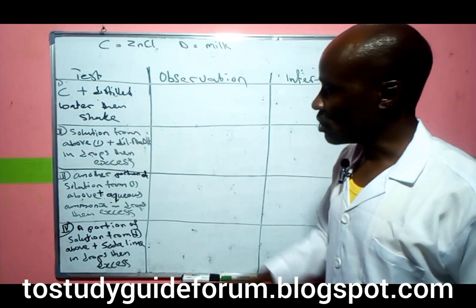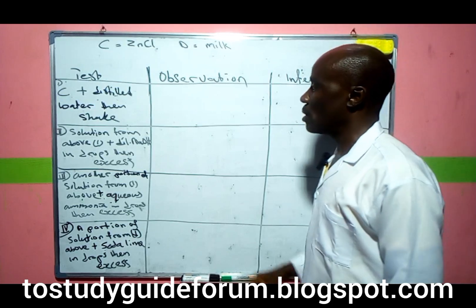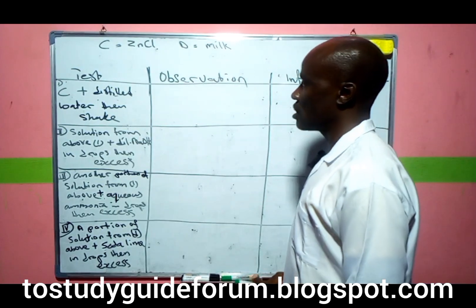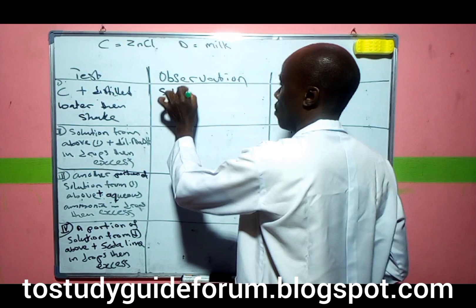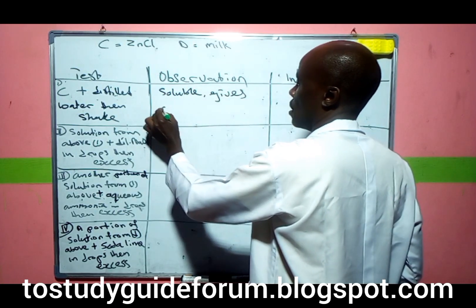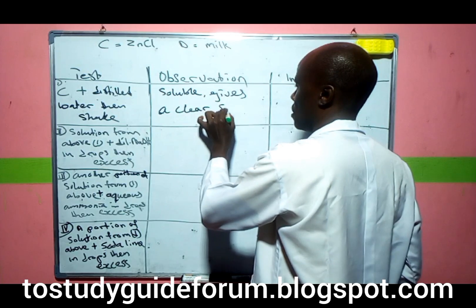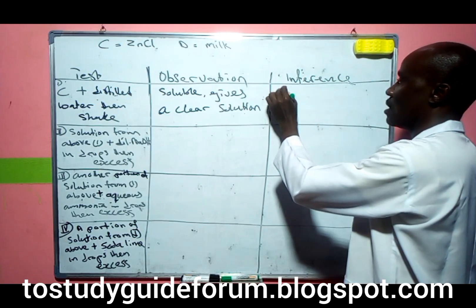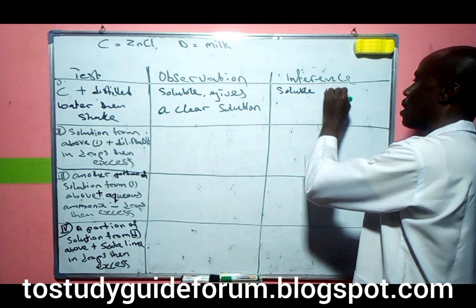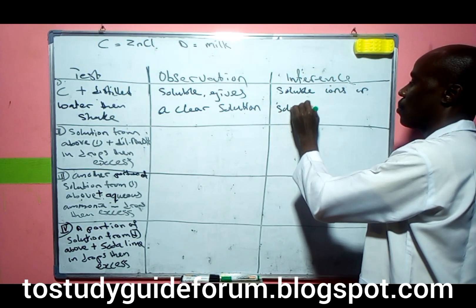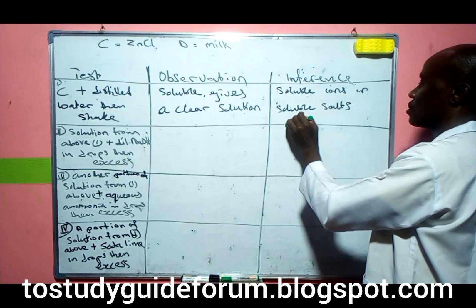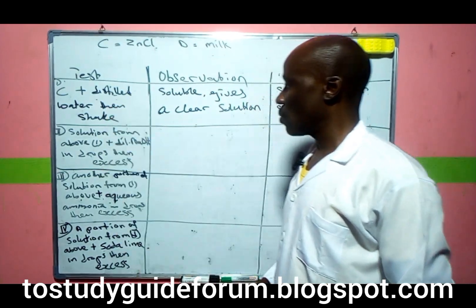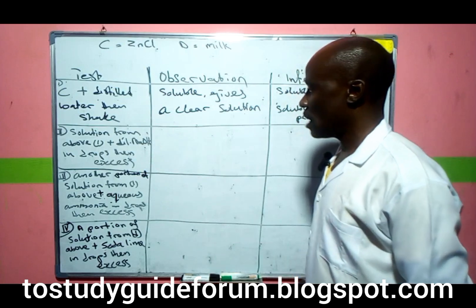The first thing you are likely to do, just like any other exam, is the solubility test. You carry out the solubility test by adding distilled water to the salt, then shake it. On shaking, the observation is that it is soluble and gives a clear solution. This simply means soluble salts are present.